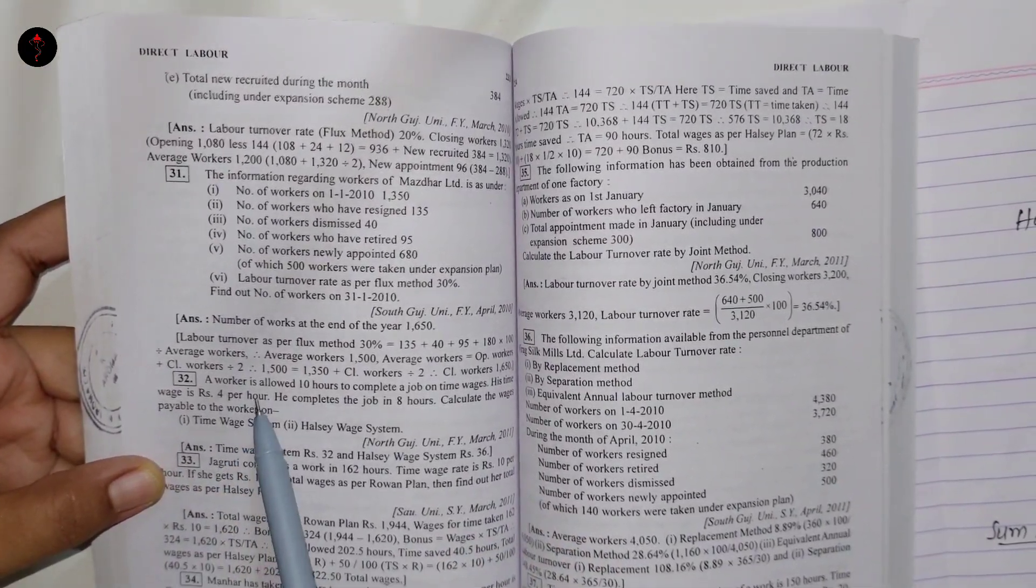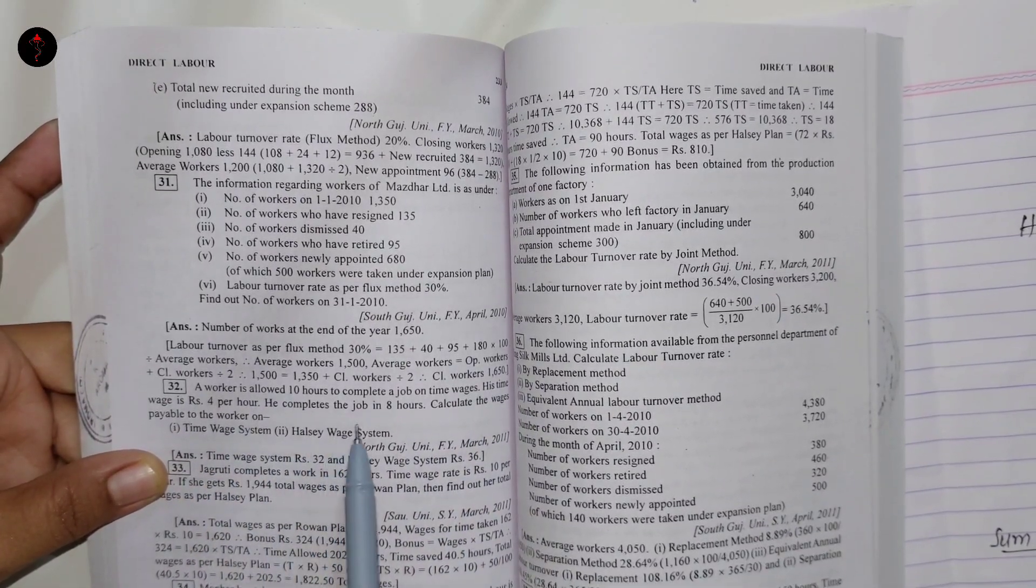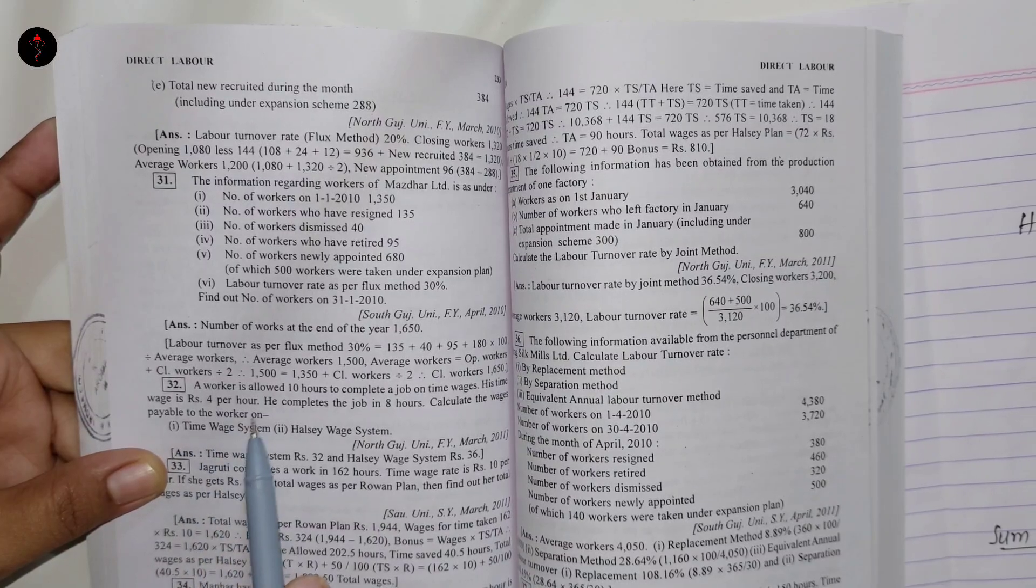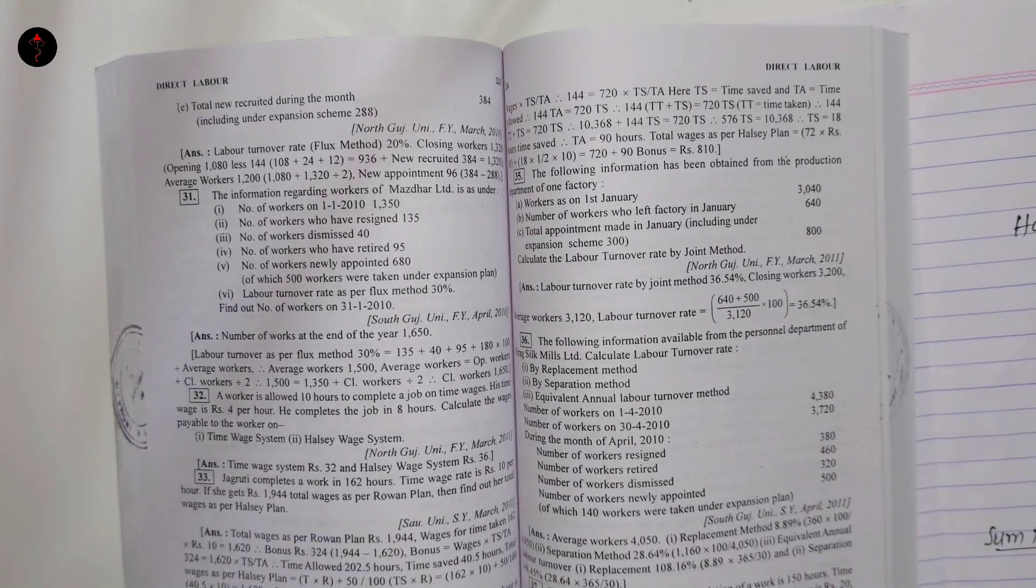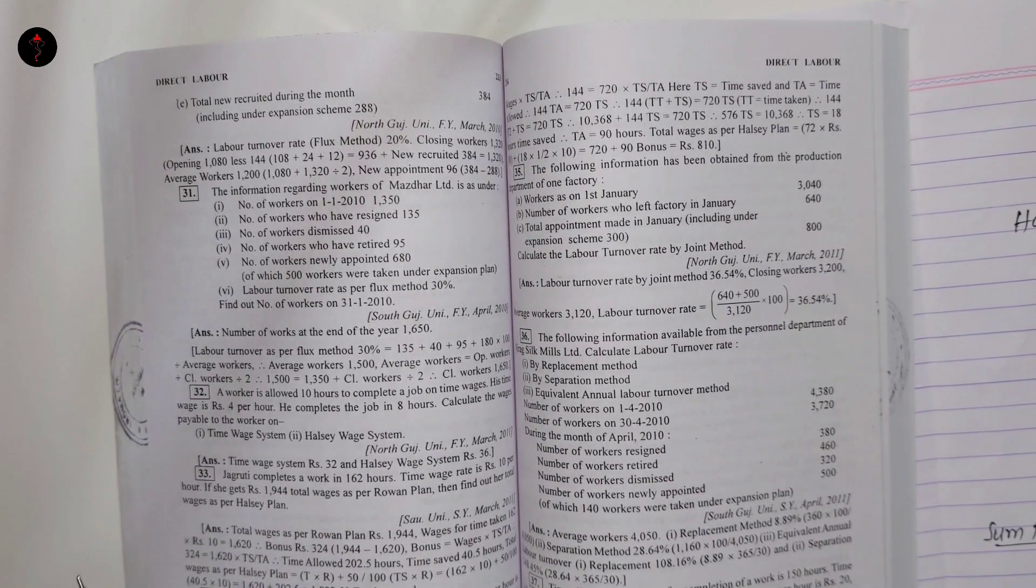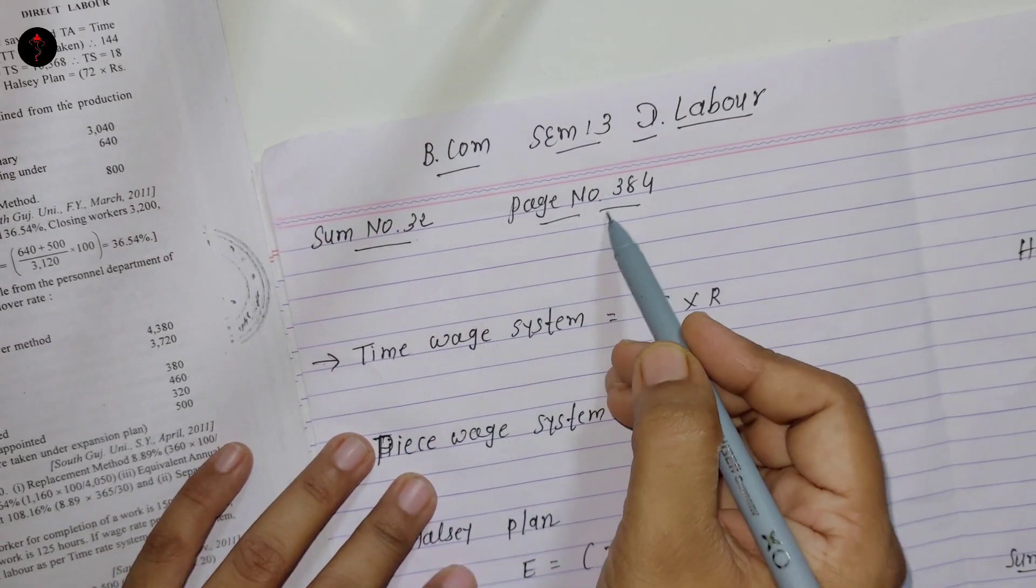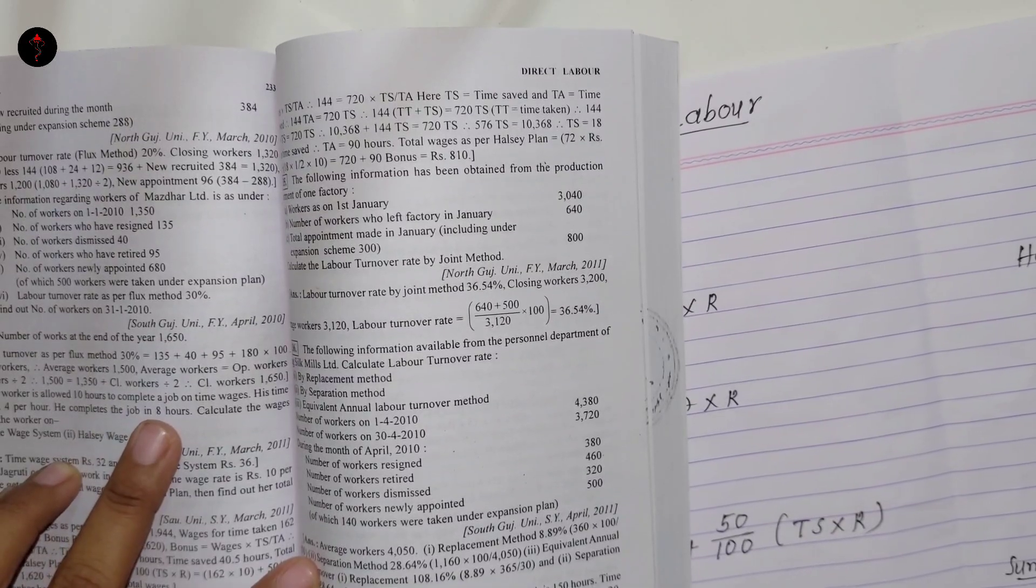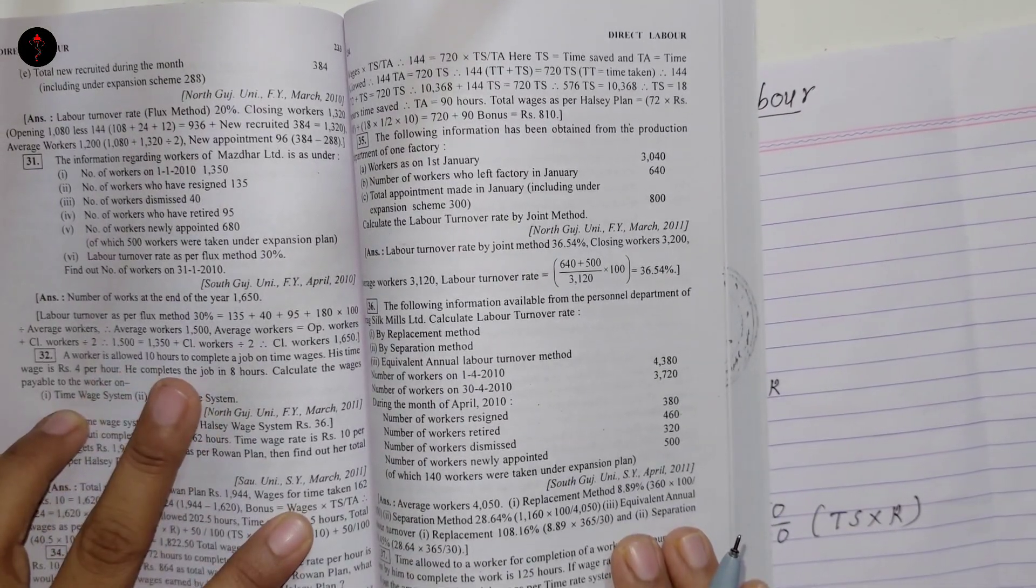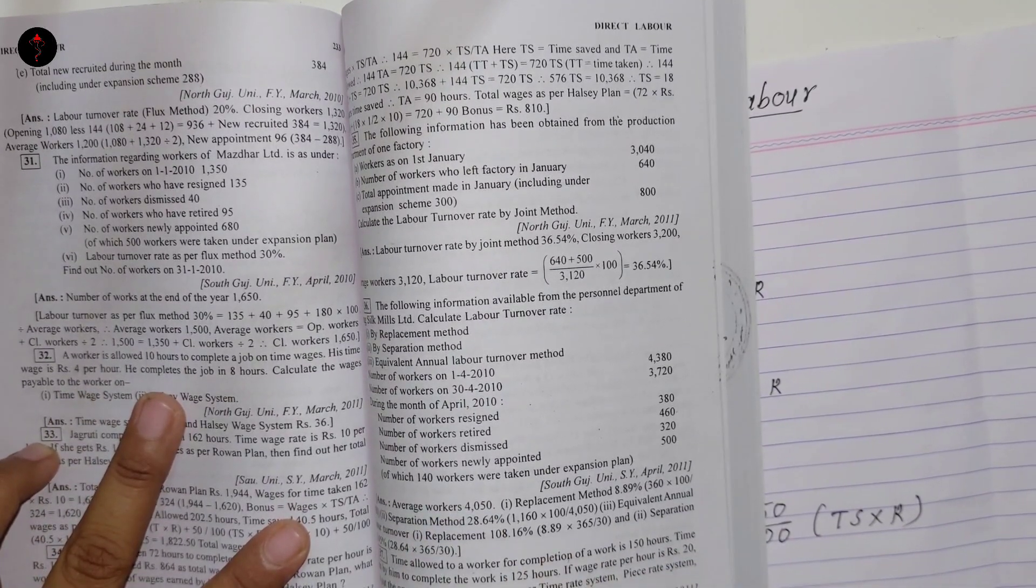Let's start Sum Number 32. A worker is allowed 10 hours to complete a job on time wages. His time wage is Rs. 4 per hour. He completes the job in 8 hours. Calculate the wages payable to the worker on time wage system and Halsey wage system. We have to find direct wages. First, I will write down the information: Time allowed is 10 hours.